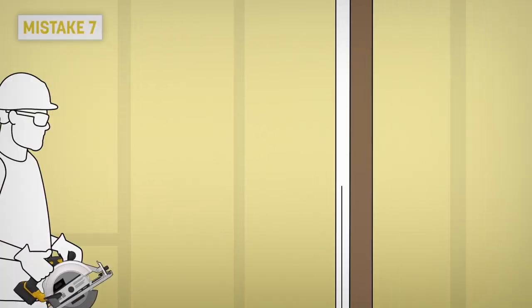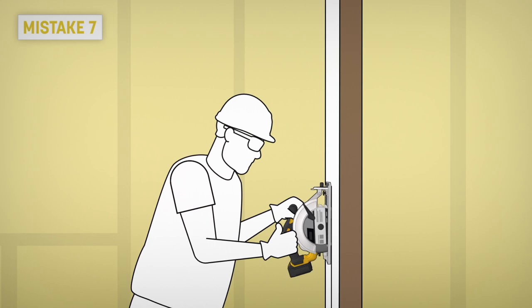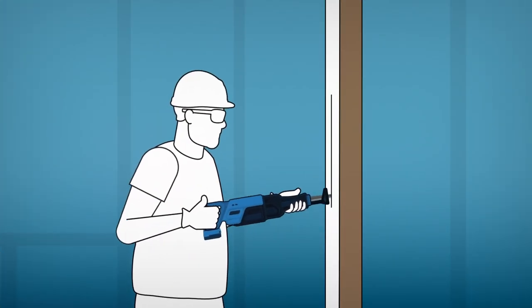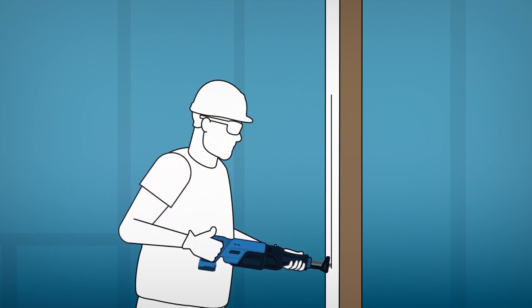Mistake 7: Sawing vertically. Even if it's tempting, you can't substitute a tool for another to save time. When you need to cut a vertical surface, use a reciprocating saw.